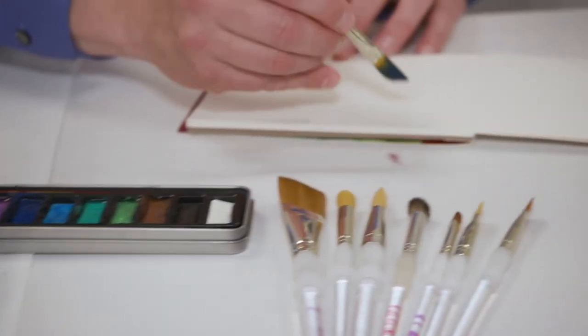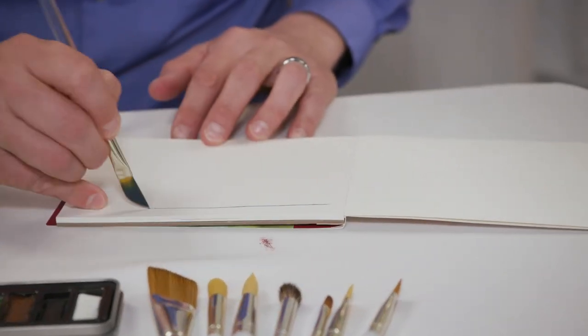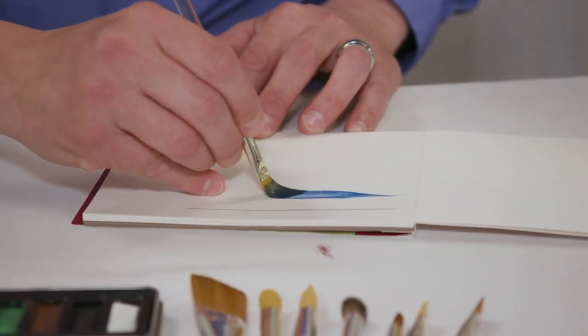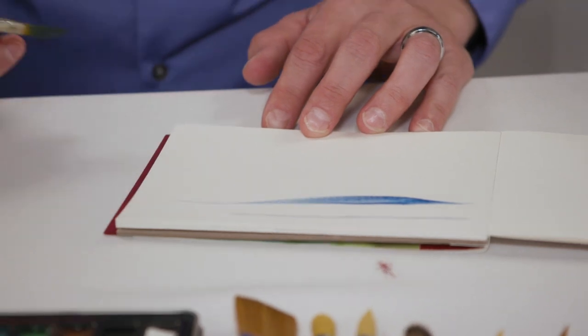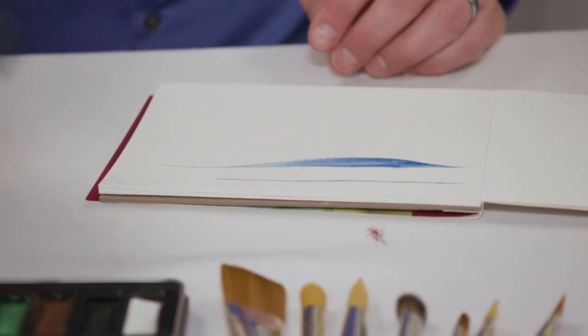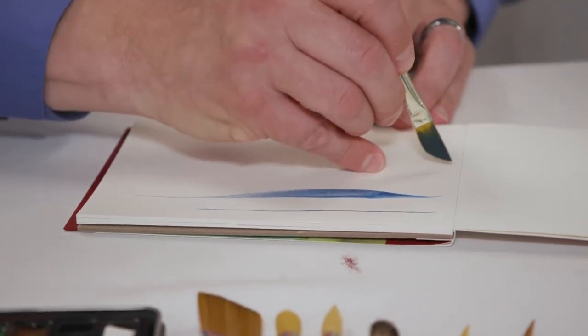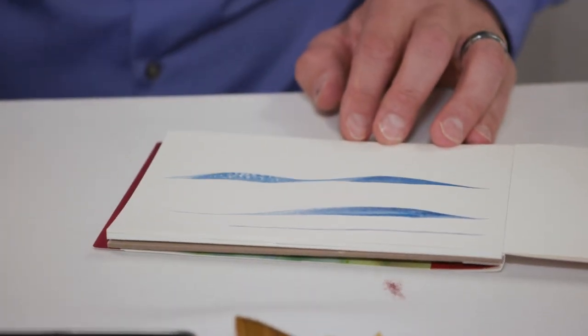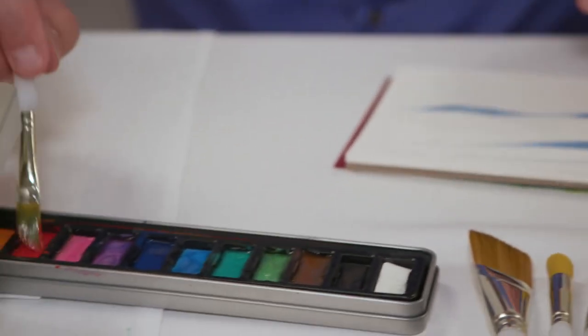And I can use it on its chisel edge to get nice fine lines. But I can also take that same brush, turn it on its side, and bring it back up onto its chisel edge to get things like strokes of grass, ribbon strokes, by going back and forth with that brush.